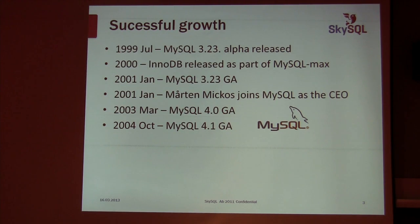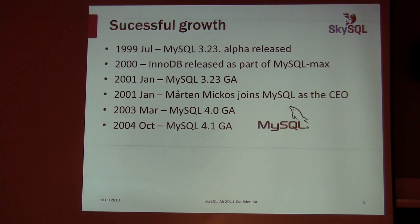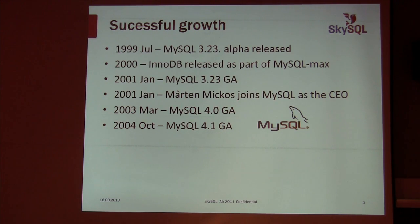It was a bit like NoSQL databases are today — not fully-featured, but sufficient for many uses. Then in January 2001, MySQL 3.23 became GA. Perhaps a more important event was that Morten Nikos joined as CEO. Prior to 2001, the CEO had been Monty the developer — he was a great developer, but perhaps not such a great CEO. It was a good decision to bring in someone with more business insight.